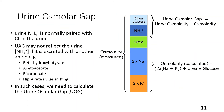Urine ammonium is normally paired with chloride in the urine. However, if urine ammonium is excreted with another type of anion, the urine anion gap may not truly reflect the concentration of ammonium. Examples of such anions include beta-hydroxybutyrate (seen in diabetic ketoacidosis), acetoacetate, bicarbonate, or hippurate (seen in glue sniffing).